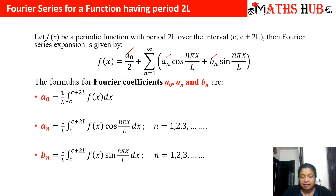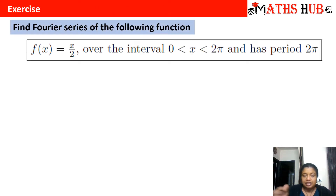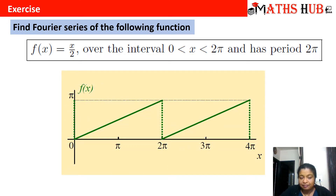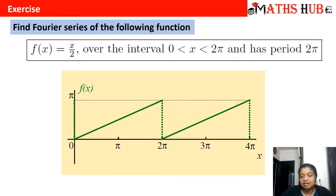Now let us apply these formulas to calculate the Fourier series of the following function: f(x) = x/2 over the interval 0 < x < 2π, which has period 2π. To check whether the function is periodic, we draw the graph — in the interval 0 to 2π the function behaves in a certain way, and when we extend the interval from 2π to 4π the function behaves in the same manner. Similarly, extending from 4π to 6π gives the same type of graph, confirming the function is periodic.